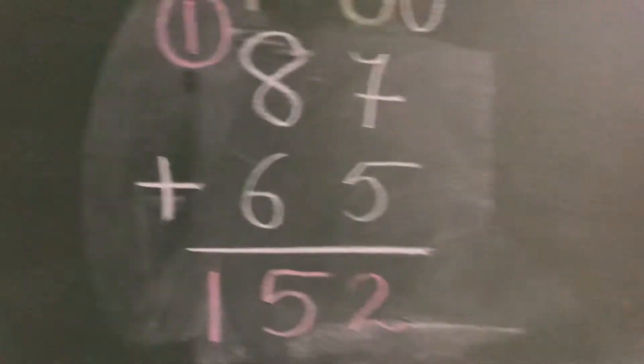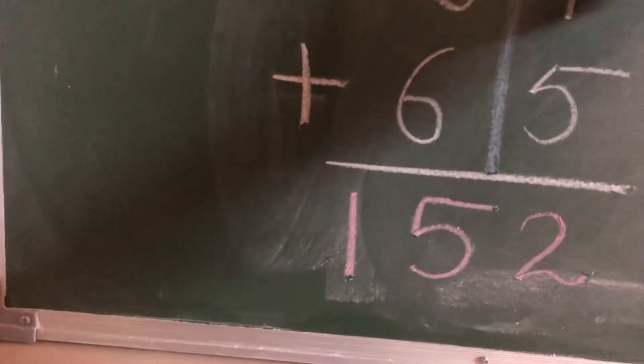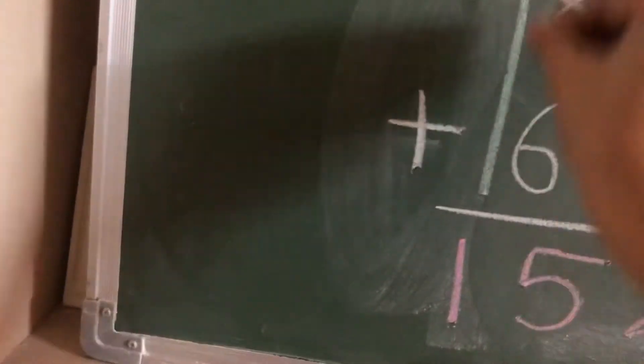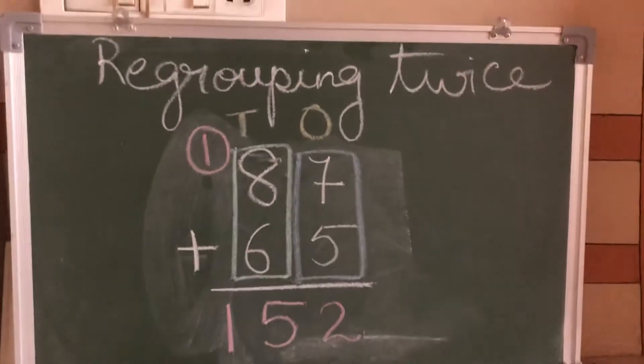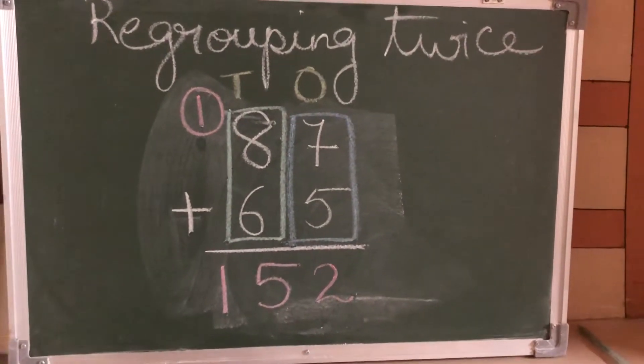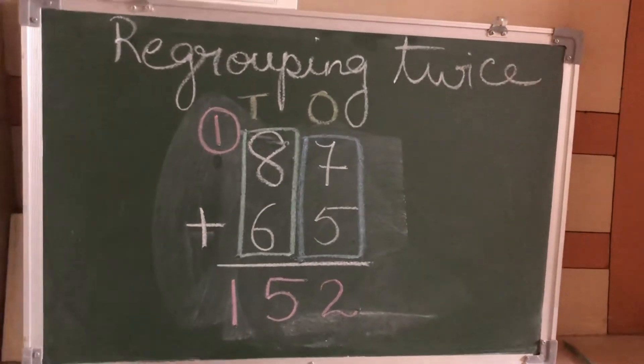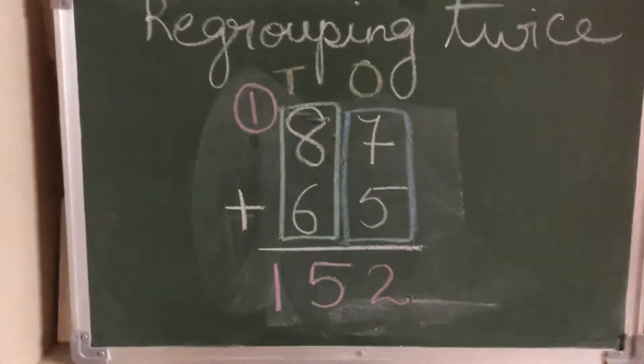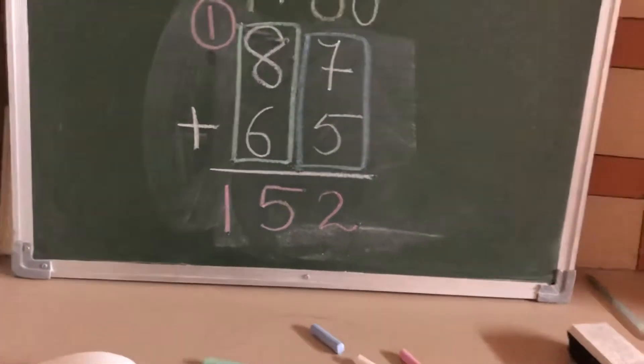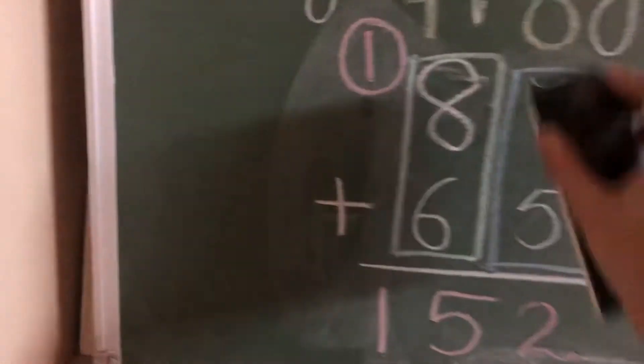We have done twice regrouping: first in ones place and then in tens place. So this is what is called regrouping twice, because now we all are adding bigger numbers. We will be doing regrouping in both the places, that is in ones place also and in tens place also.